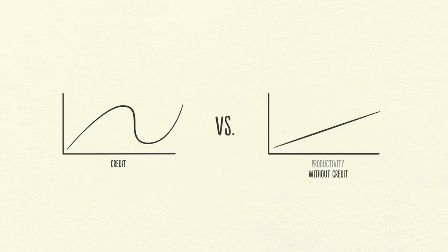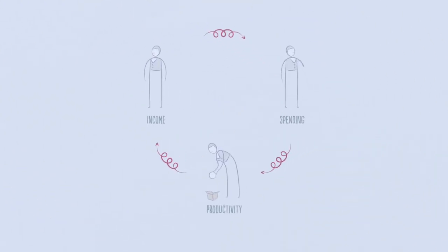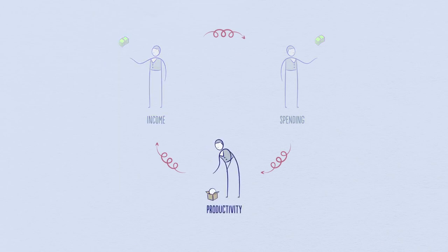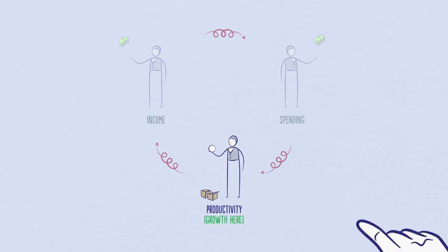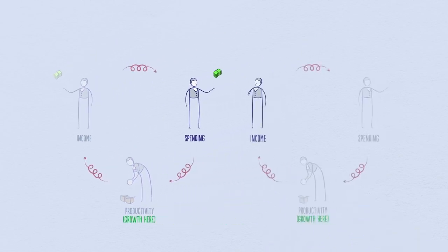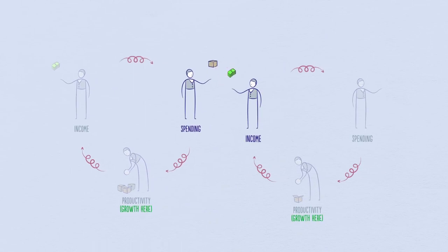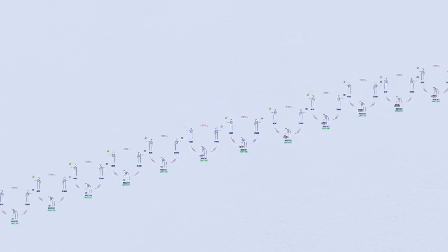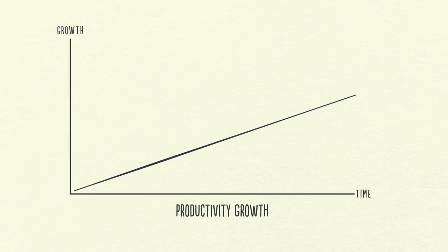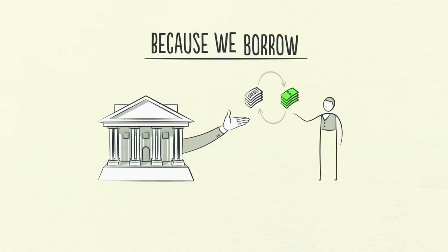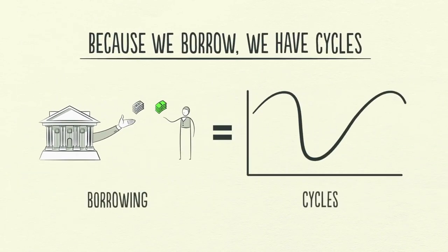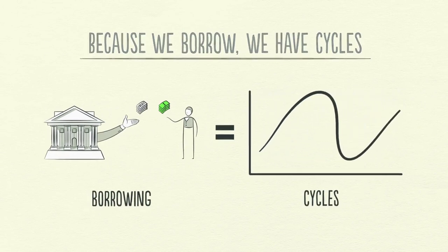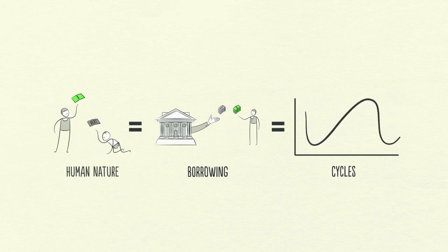Let's imagine an economy without credit. In this economy, the only way to increase my spending is to increase my income, which requires me to be more productive and do more work. Increased productivity is the only way for growth. Since my spending is another person's income, the economy grows every time anyone is more productive. We see a progression like the productivity growth line. But because we borrow, we have cycles — not due to any laws or regulations, but due to human nature and the way that credit works.